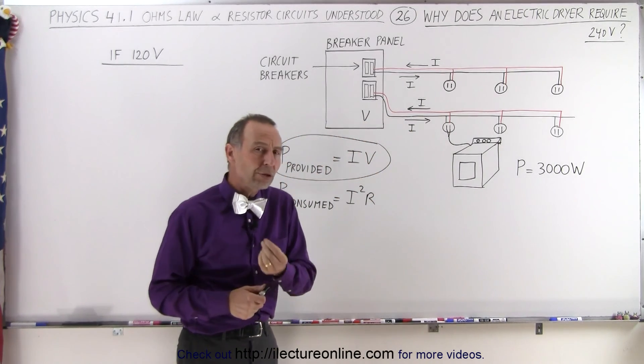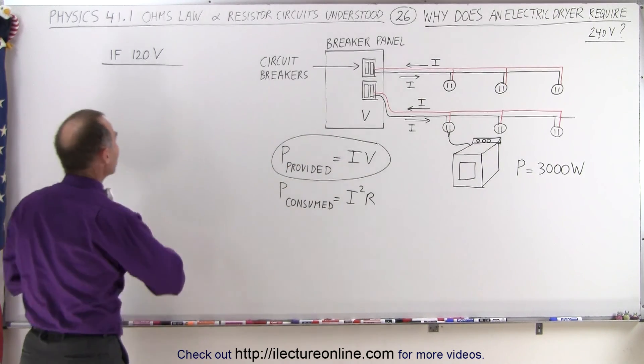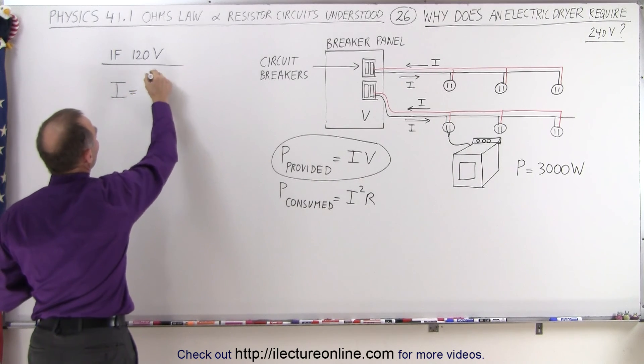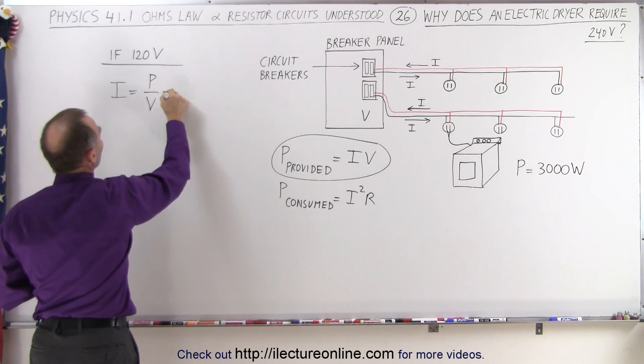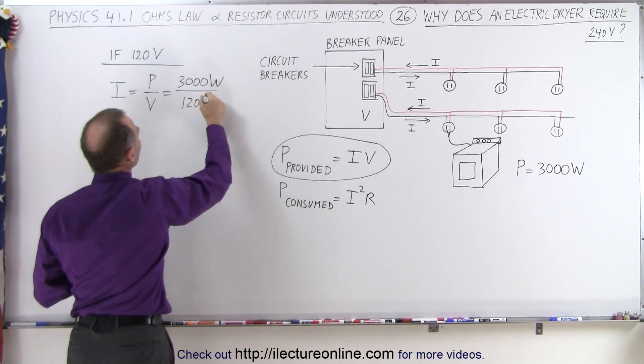Well, if we were only using a 120 volt circuit, then we use the equation P equals I times V. Let's solve this for I. We have I which is equal then to the power divided by the voltage, so we have a 3000 watt dryer divided by 120 volts.